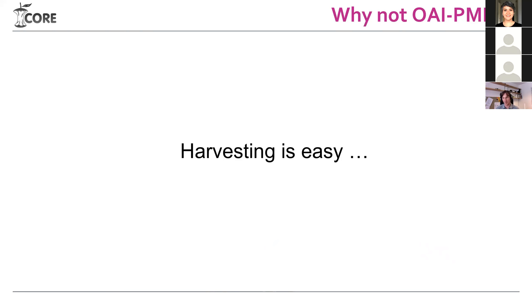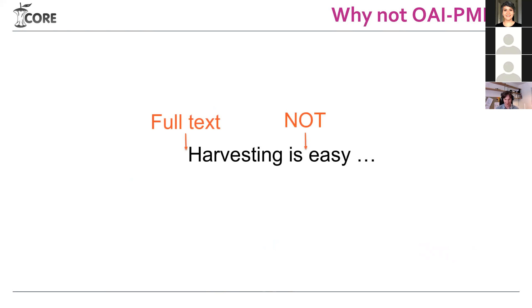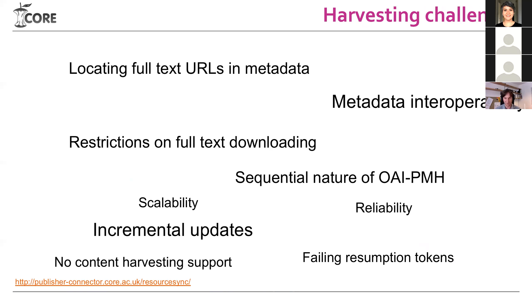People would say to just use OAI-PMH because harvesting with it is easy, but I would argue that full-text harvesting with OAI-PMH is really, really not easy. Some of those problems are: locating the full-text URLs in metadata items, interoperability of metadata records from repositories, the sequential nature of OAI-PMH — some repositories are too big for harvesting and it takes a very long time — scalability in general, reliability, and incremental updates, where you want only the increments rather than having to redo all the work.